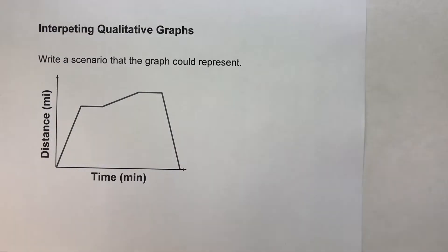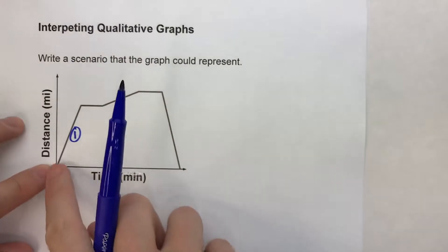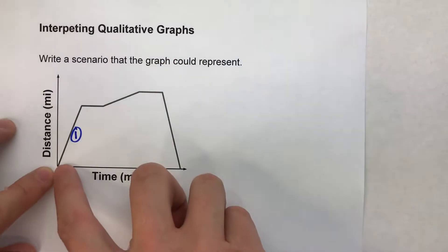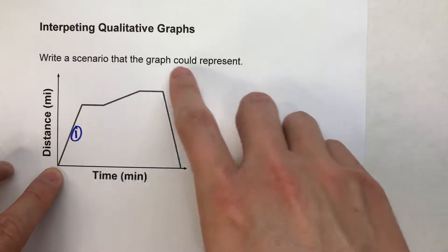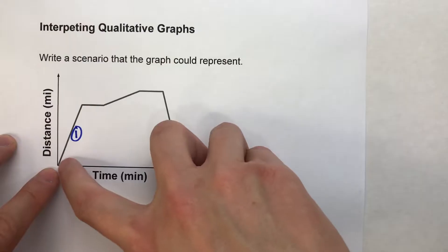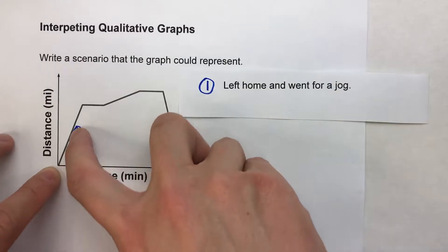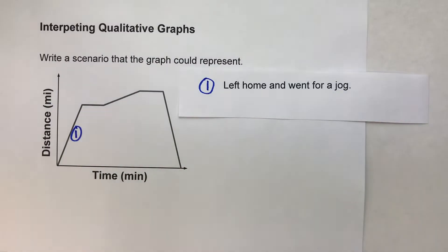But let's kind of go through this example here. Now notice in our example here our first interval starts at zero and is increasing. So we can tell that for example let's say this is a jogging scenario. You're leaving home and going jogging. So notice in this example we left home and now we're going for a jog at a fairly constant rate right here because it's a straight line. So that's the first interval.